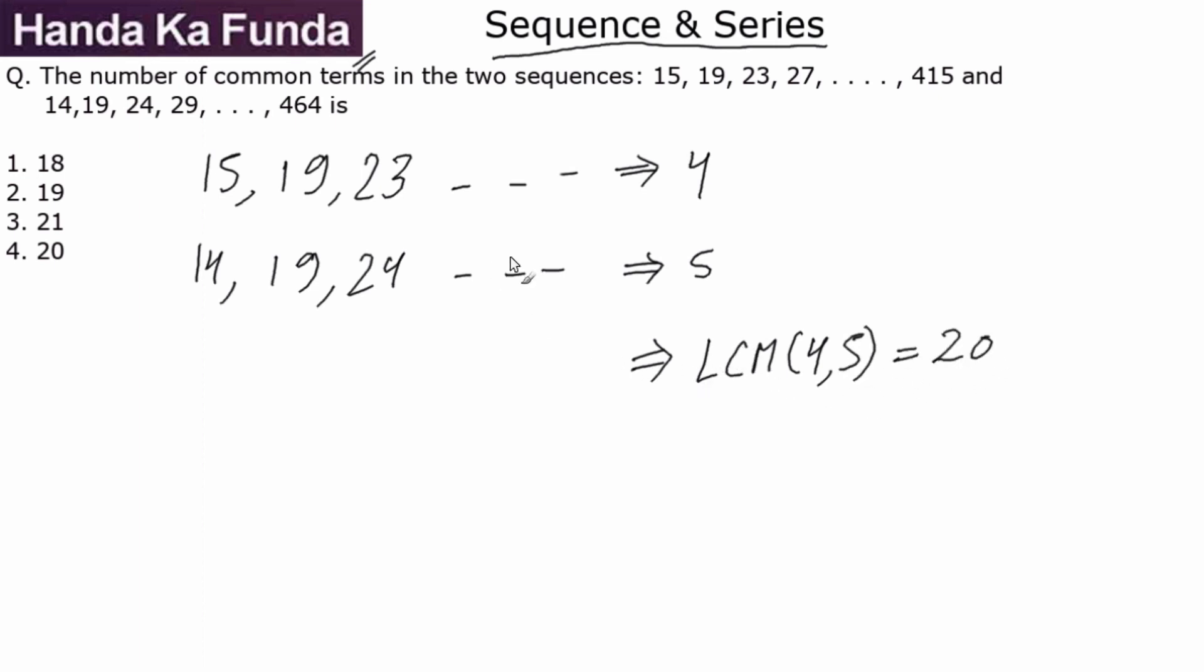Now all you need to do is figure out which terms are common to the series. As you can see, 19 is the term which is common to the series. Then there will be a common difference of 20, so the next term will be 39, another 20 is 59, another 20 is 79, and so on. Now the challenge is to find out what will be the last term in the series.